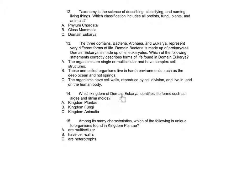A: Kingdom Plantae, B: Kingdom Fungi, C: Kingdom Animalia. Number 15: Among its many characteristics, which of the following is unique to organisms found in the kingdom Plantae? A: are multicellular, B: have cell walls, C: are heterotrophs.